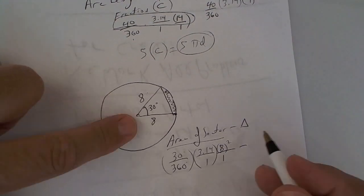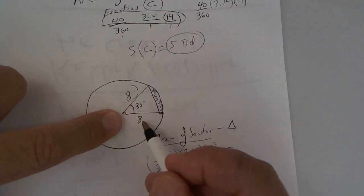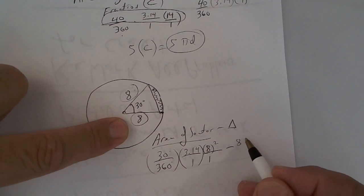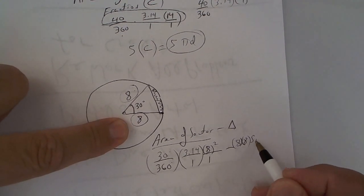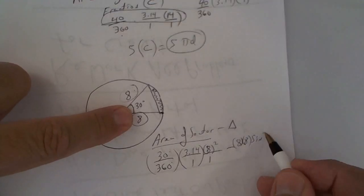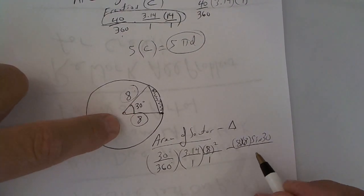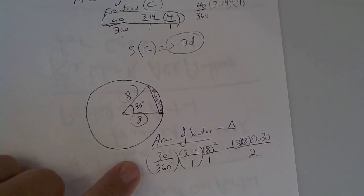Minus the triangle. To do the triangle, you're going to do side times side, 8 times 8 times the sine of the included angle, which is the one in between. Divide it by 2. Now, I don't have a calculator here at home, but this is the formula.